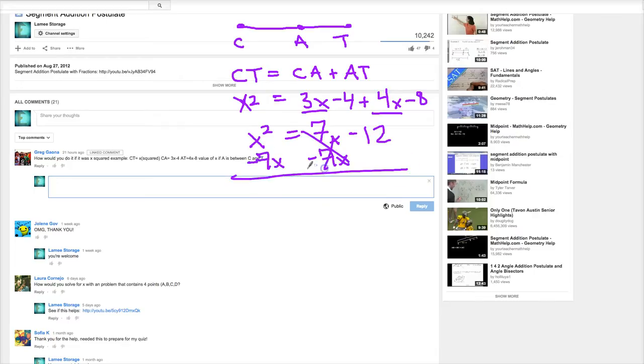It cancels here, but on this side it becomes x squared minus 7x equals negative 12. I need to get rid of negative 12, so I'm going to add 12.